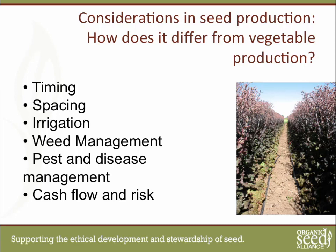Spacing is another area where seed growing differs — it's often going to require much wider spacing than growing for a vegetable. Where you might fit three, four, or five rows of lettuce on a bed, for seed you'll go down to a single or double row with much wider spacing between plants. Some people take advantage of this difference by first growing a vegetable crop and then thinning it out to make it a seed crop. The main reasons: seed crops get much bigger than vegetable crops.